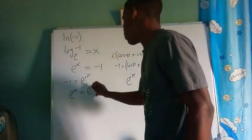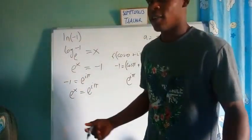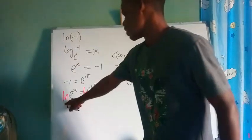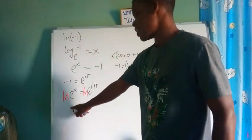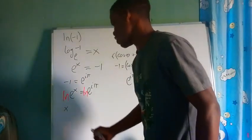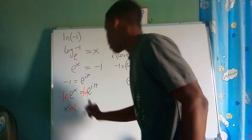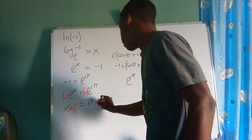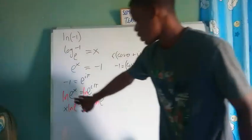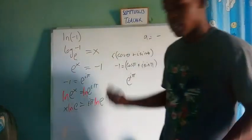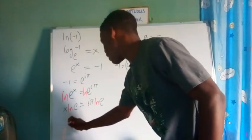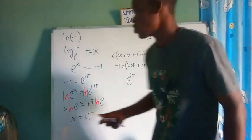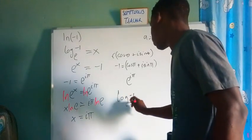So our equation e to the x is equal to e to the iπ. Taking the natural log on both sides: ln of e to the x gives us x times ln(e), and ln of e to the iπ gives us iπ times ln(e). Since ln(e) equals one on both sides, we have x equals iπ. Our x was the value we set as ln(-1) in our contradiction, so ln(-1) equals iπ.